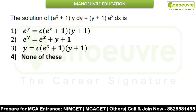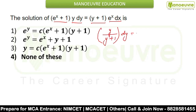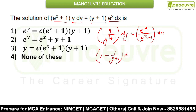We have to find the solution of (e^x + 1)·y dy = (y + 1)·e^x dx. When you notice this question, you can write it as e^x / (e^x + 1) dx. You can easily write 1 minus 1/(y+1) into dy, and on the right side we have e^x / (e^x + 1).